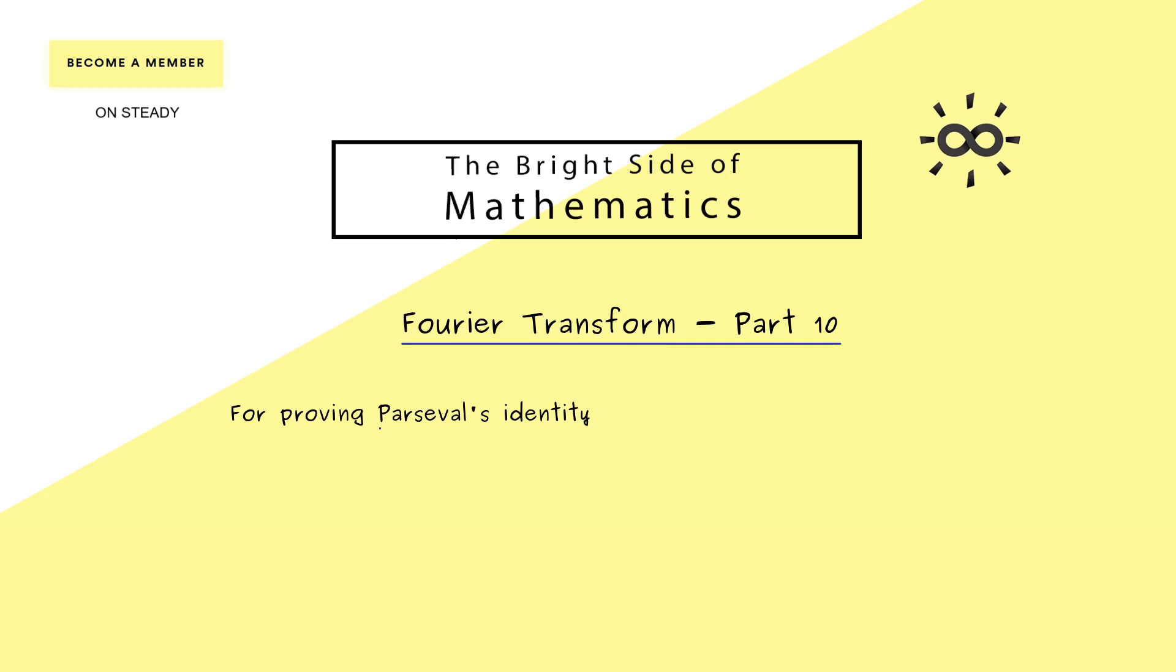Please never forget, what we want is to prove Parseval's identity here. And as already mentioned, we want to do that for all L2 functions. And there we should start with some simple L2 functions, which we usually call step functions. So these are just functions that are piecewise constant. For example they could look like this and then they should repeat 2π periodically. And please also note, it does not matter at all what they do at the jump points here.